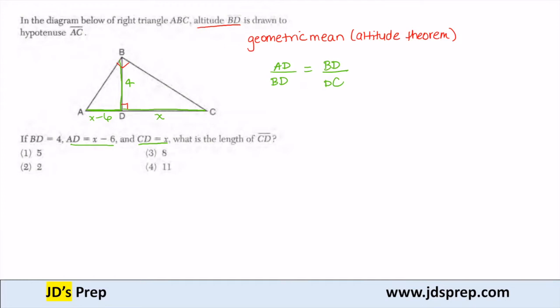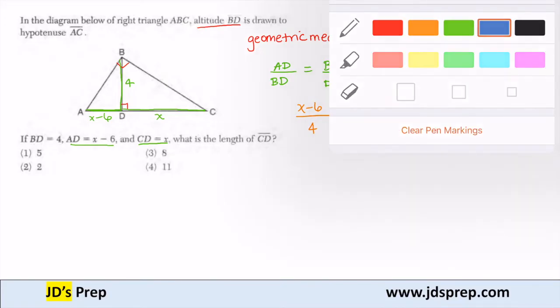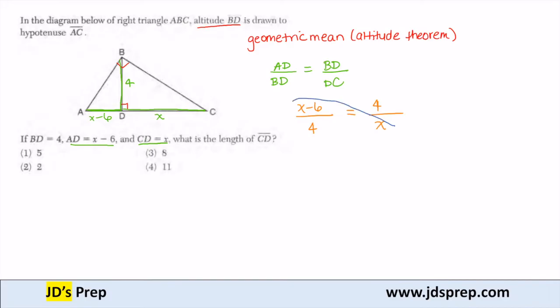Because we have this proportion, we can plug in all the information we know and solve for x. So AD — that one segment — is x minus 6, over our altitude, which is 4. And that's equal to our altitude, 4, over our other line segment, which is x. Because this is a proportion, we're going to cross-multiply.